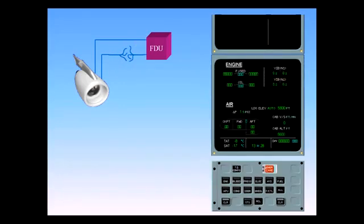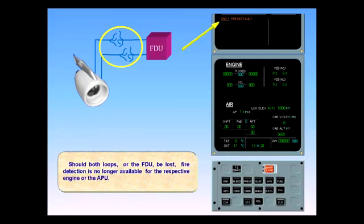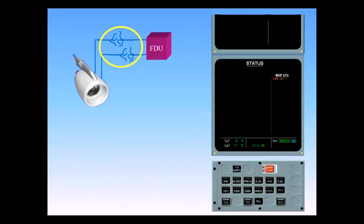Should both loops or the FDU be lost, fire detection is no longer available for the respective engine or the APU. Crew awareness and a close monitoring of the respective engine indications are now required. However, should both loops break within a five-second period, a valid fire warning is triggered.